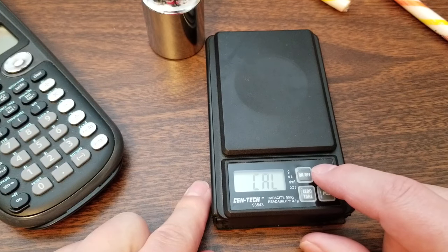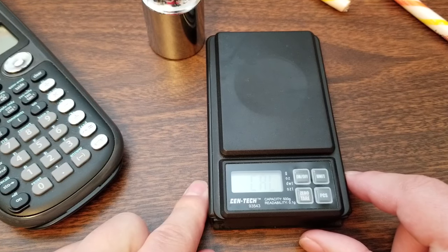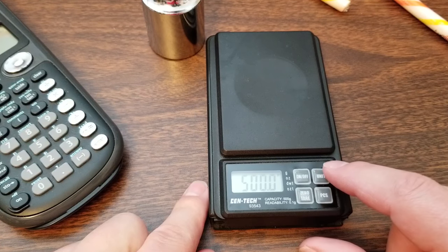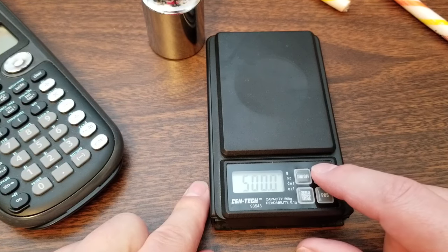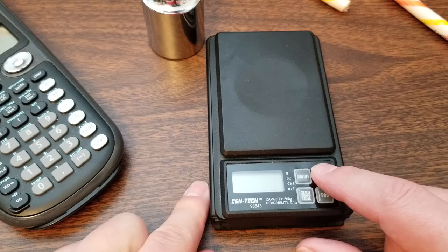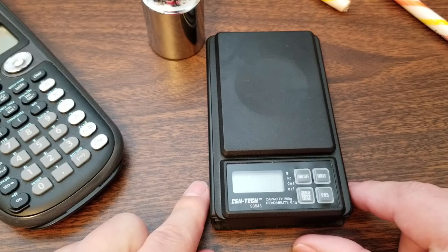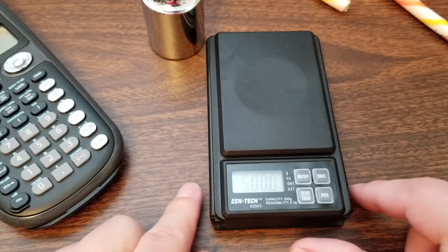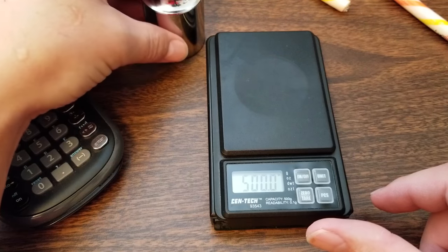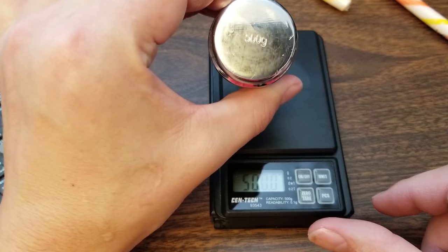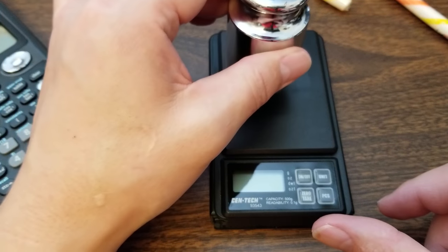Now, we press unit again. Cal's blinking, and it says 500, meaning 500 grams. We press unit again. I think, now that it's blinking, it's looking for this 500 gram weight.